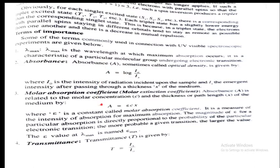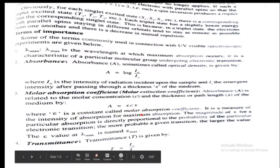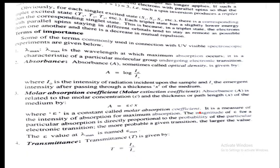Next we discuss the molar absorption coefficient, or molar extinction coefficient. Absorbance is related to the molar concentration C and the path length x of the medium by the formula A equals epsilon times C times x, where epsilon is a constant called the molar absorption coefficient. It is a measure of the intensity of absorption at maximum absorption. The more probable a given transition, the larger the value of epsilon.